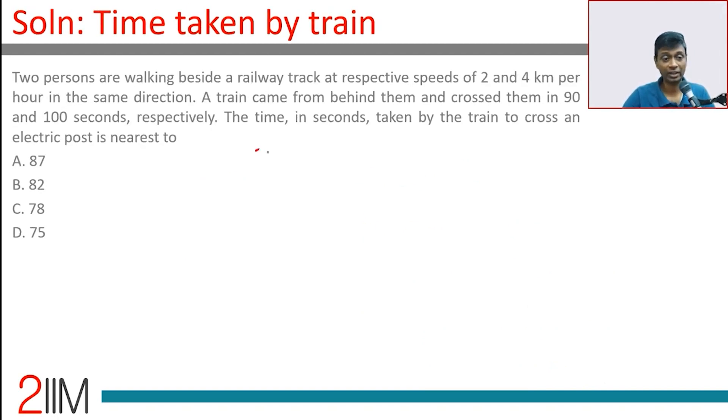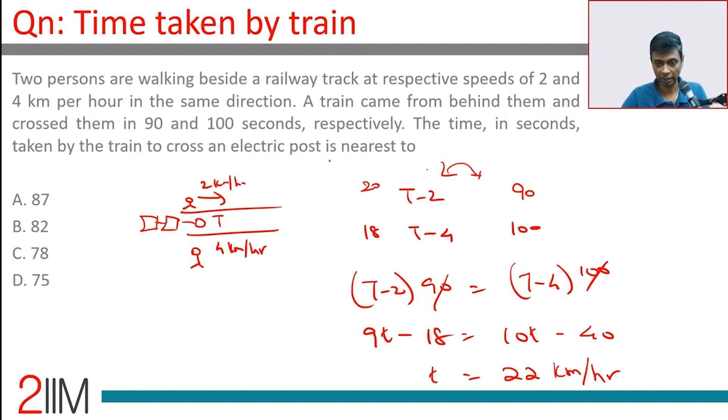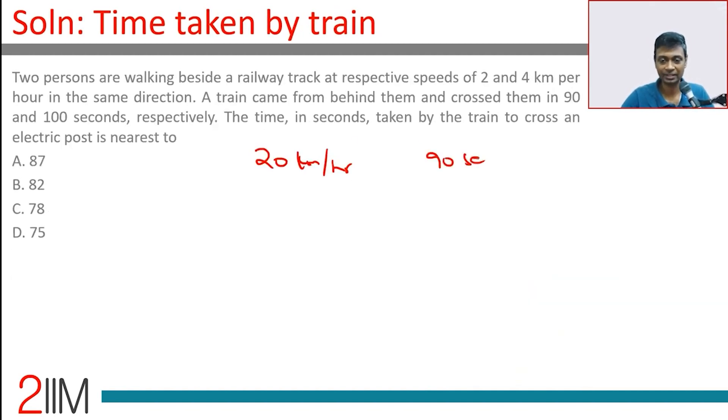Now the train alone travels at 20 kilometers per hour, the train takes 90 seconds. Traveling at 22 kilometers per hour, how much time will the train take? 90 times 20 divided by 22, make it 11, make it 10: 900 divided by 11.